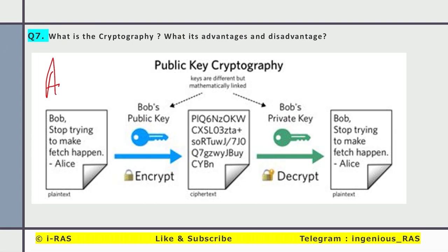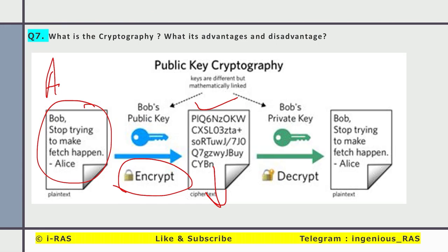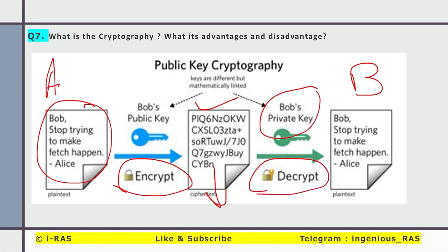Say for example, A sends a message; it got encrypted — no one can understand what it means. Then it reaches receiver B. Receiver B needs a key to decrypt it. Through the private key it got decrypted and here you can see the same message — B can read it.